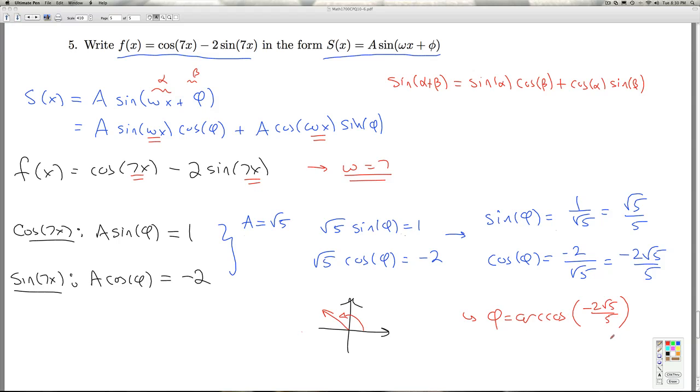So that gives me the φ. So I go back to my original function, and I'm set for my final answer. S of x is sine ω x plus φ. A we pick to be the square root of 5, sine, ω is 7, 7x plus φ, the arc cosine of negative 2 radical 5 over 5.